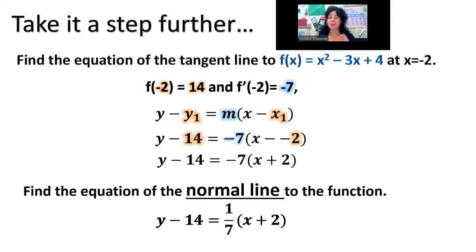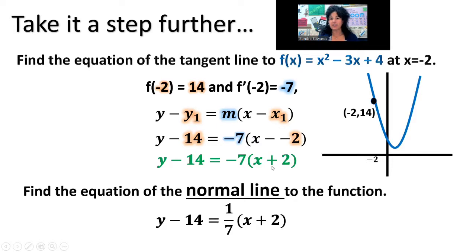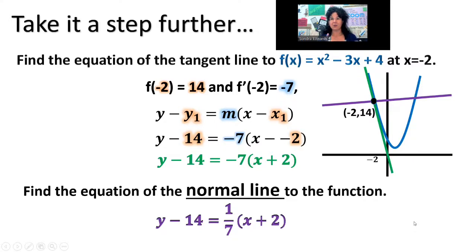The last thing I want to do is make a quick sketch to put all these pieces together, so you understand what it is you're finding. Here is the parabola f of x. At x equals negative 2, substituting into the function gives 14, so we have that point on the parabola. There is the tangent line: y minus 14 equals negative 7 times x plus 2. And then the normal line is perpendicular to the tangent. We have our original function, the equation of the tangent, and the equation of the normal line.